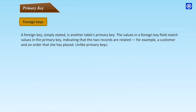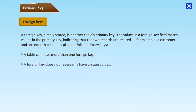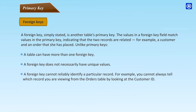Foreign Keys: A foreign key is simply another table's primary key. The values in a foreign key field match values in the primary key, indicating that the two records are related — for example, a customer and an order that she has placed. Unlike primary keys, a table can have more than one foreign key. A foreign key does not necessarily have unique values and cannot reliably identify a particular record. You create a foreign key when you use the Lookup Wizard to create a field.